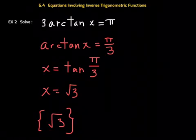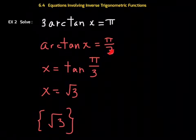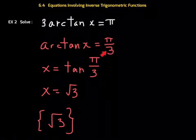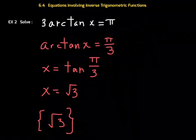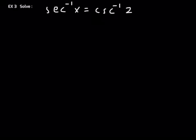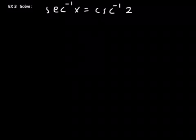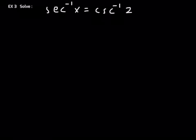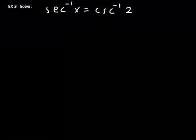It's pretty straightforward as long as you remember what this notation means. Arctan of x is π over 3 means that π over 3 is the angle whose tangent gives me x. Let's look at the next example. Inverse secant of x is equal to inverse cosecant of 2. I'm going to introduce a strategy that we actually used back in 6.1. And that is, I'm going to suggest that we make a substitution.